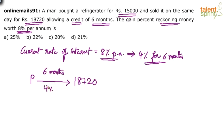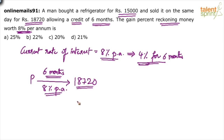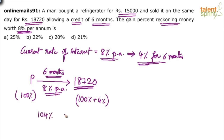At eight percent per annum — four percent for six months — what we want to find is how much to deposit in the bank today to get 18,720 after six months. The principal is always 100%. So 18,720 can be taken as 100% plus four percent, which is 104%. So 104% is equal to 18,720. What is 100%? That means the principal is equal to what? Try and calculate.